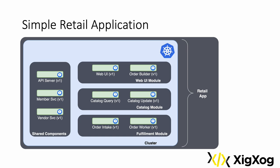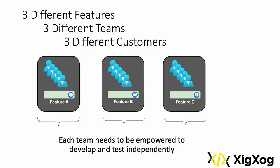Let's take a look at a simple retail application. We have three modules: a web UI module, a catalog module, and a fulfillment module, each comprising two components. And we have three shared components. Suppose I have requests from three customers for features to be added to the application. I decide to assign three different teams to develop these features. I want each team to work in parallel, quickly and efficiently, with as little overhead as possible and without conflicting with the other teams.